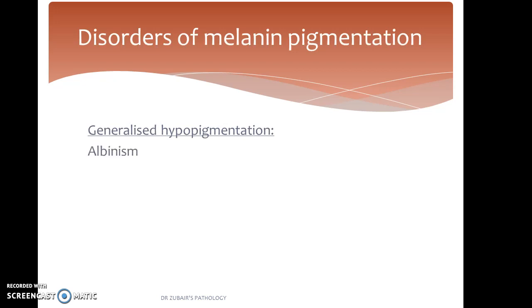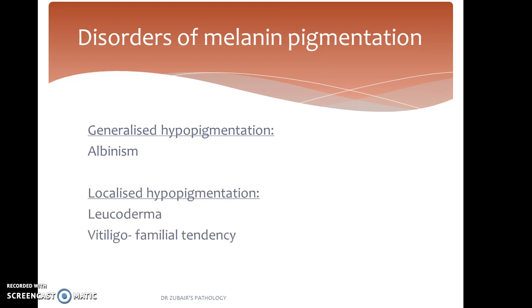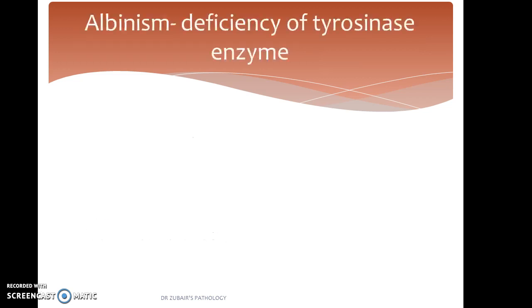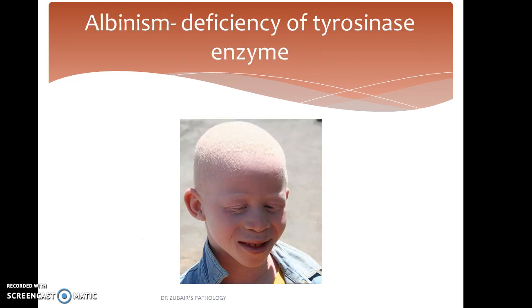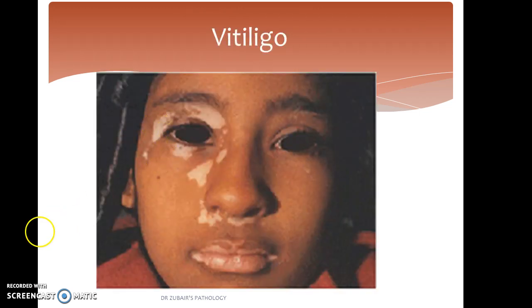We can also have generalized hypopigmentation seen in conditions such as albinism, and localized hypopigmentation in leukoderma and vitiligo, which has a familial tendency. This patient is suffering from albinism due to deficiency of the tyrosinase enzyme. In vitiligo, we can appreciate the hypopigmented patches.